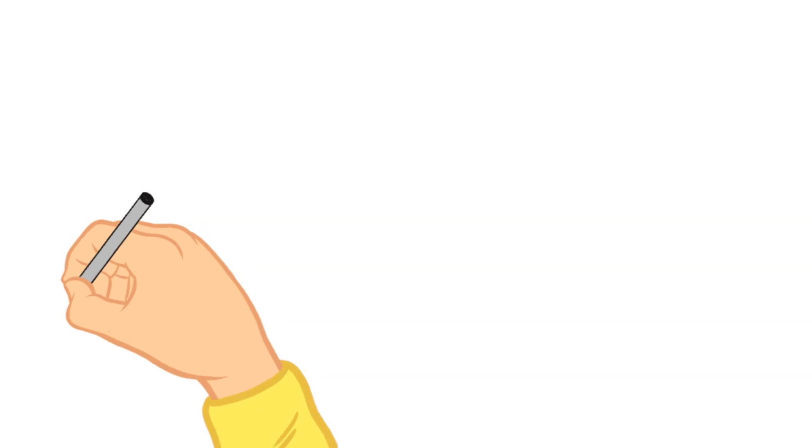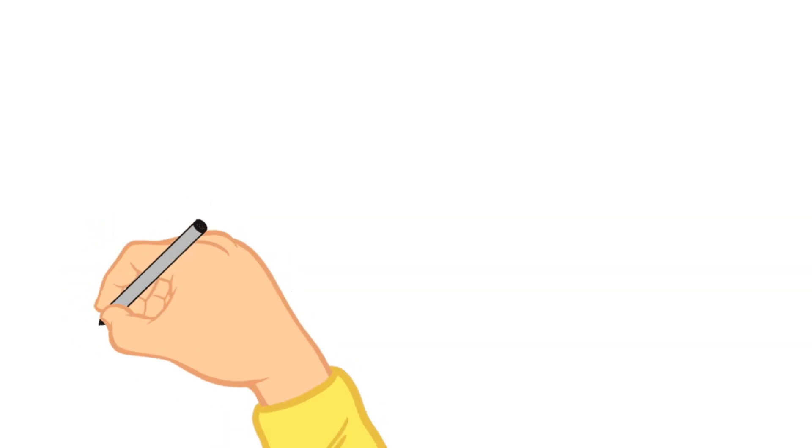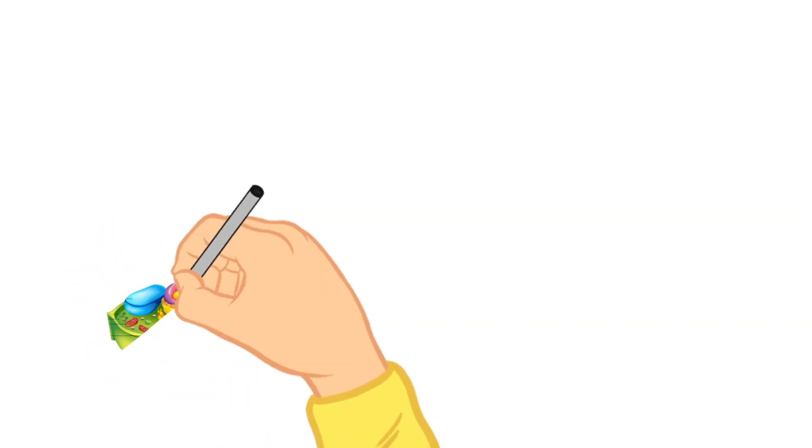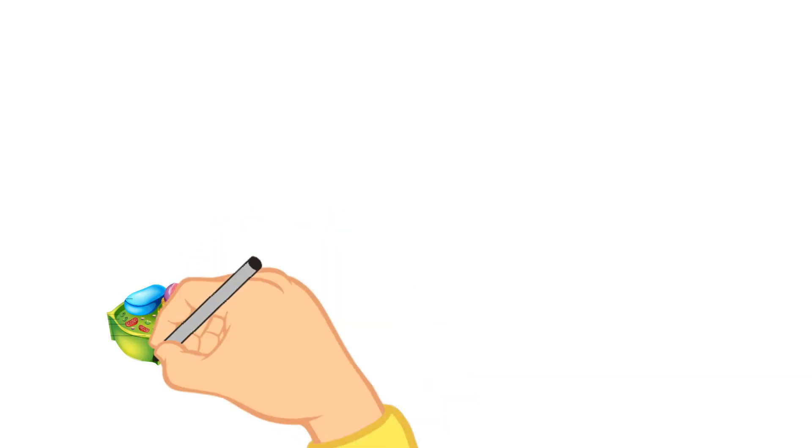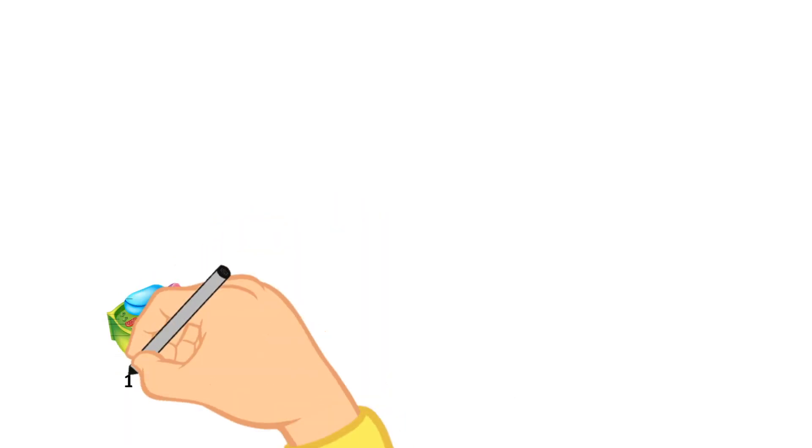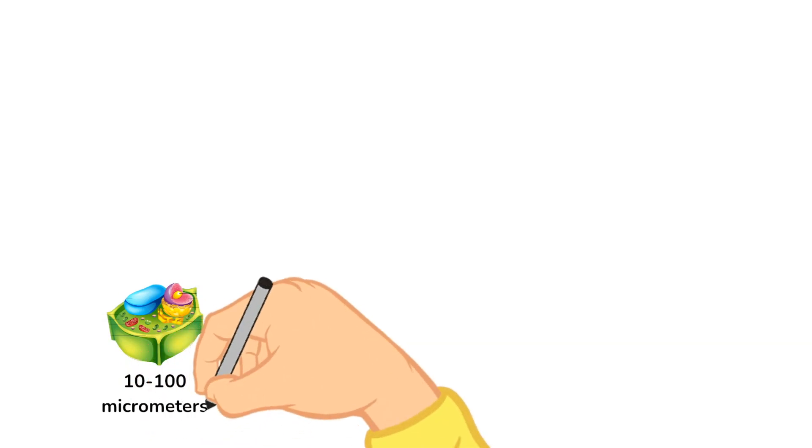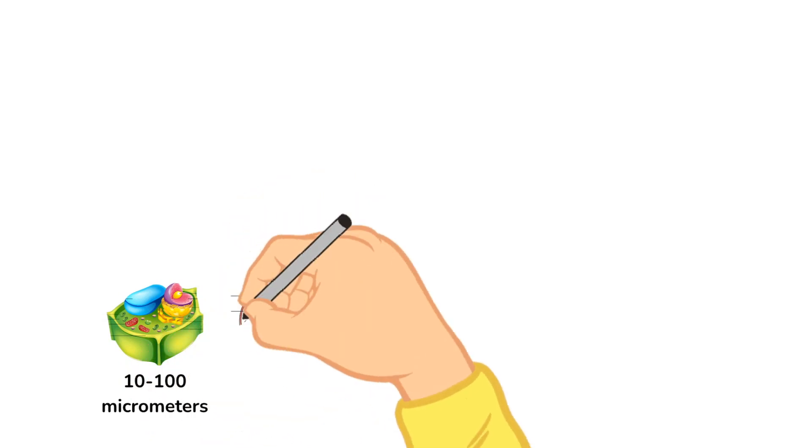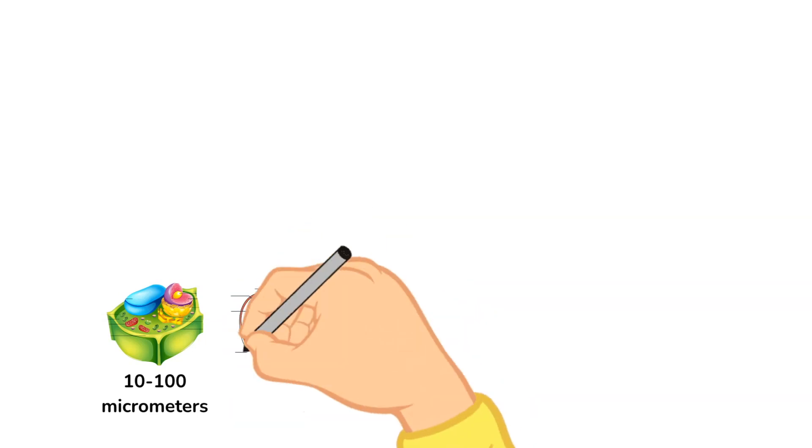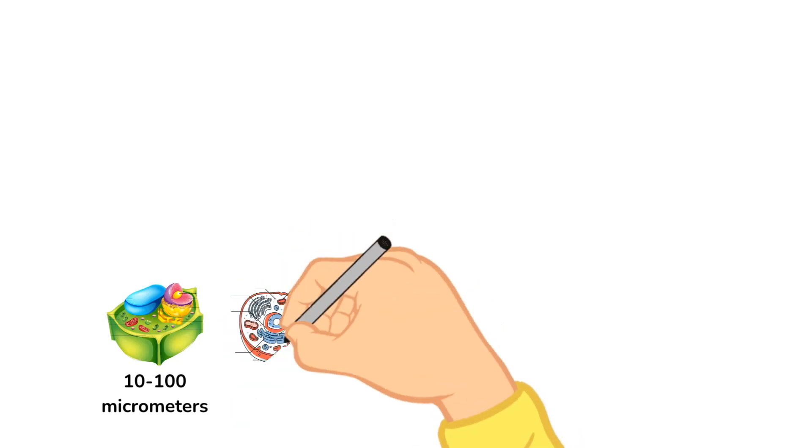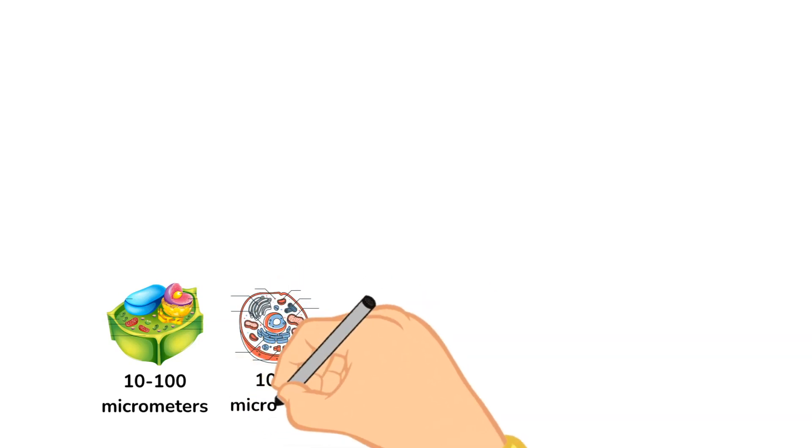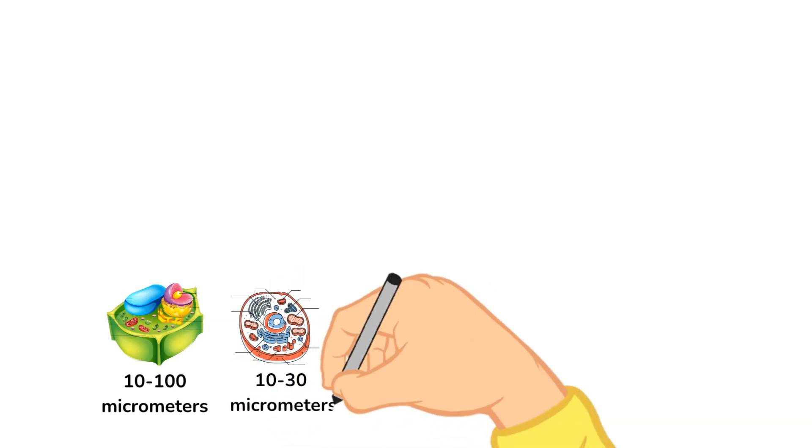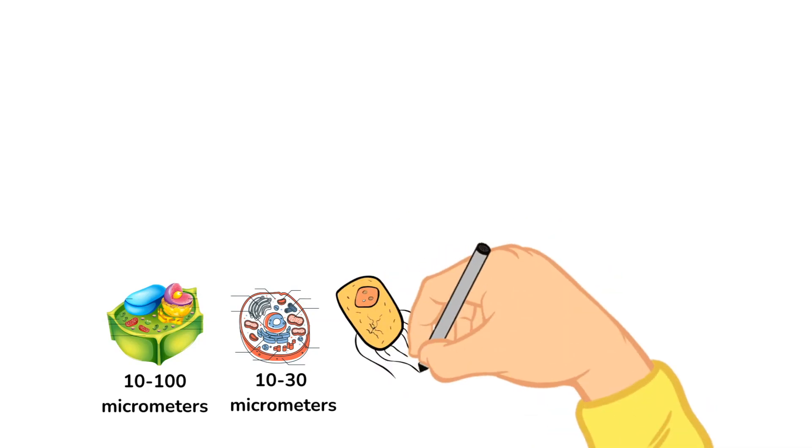Both animal cells and plant cells contain membrane-bound organelles like mitochondria and a nucleus and a Golgi apparatus. Animal cells are often much smaller than plant cells as well. An animal cell ranges in size from 10 to 30 micrometers whereas a plant cell ranges in size from 10 to 100 micrometers.